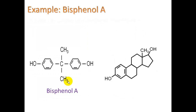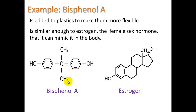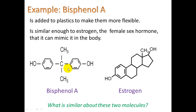Bisphenol A (BPA) is a chemical added to plastics to make them more flexible, but it's also an estrogen mimic. Comparing the two chemicals, they both have an OH group on the ends and a methyl group (CH₃), and apparently that similarity in shape is enough to cause BPA to act like estrogen.